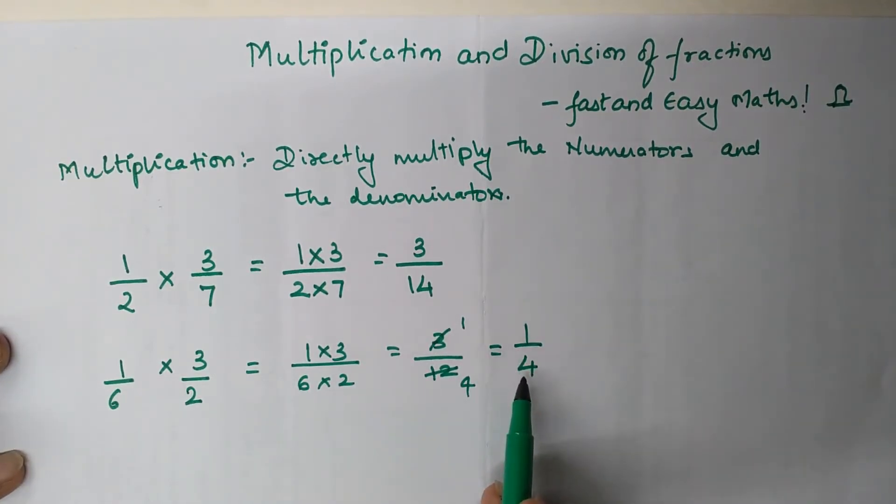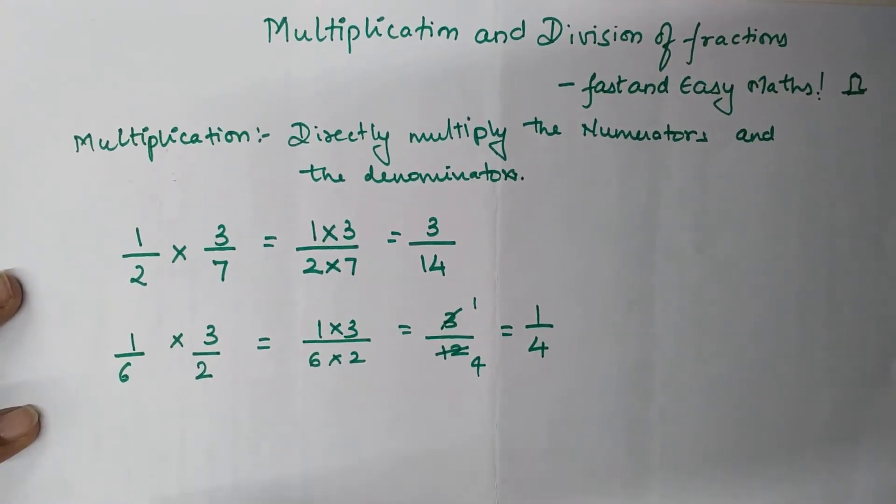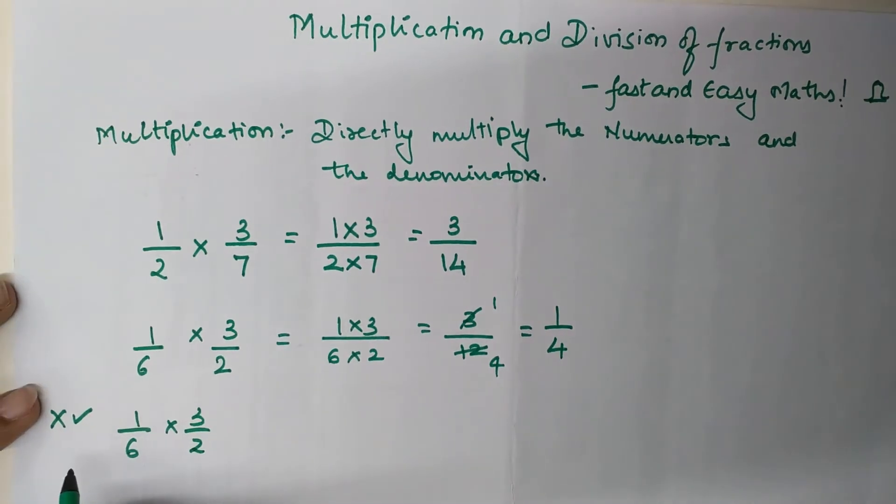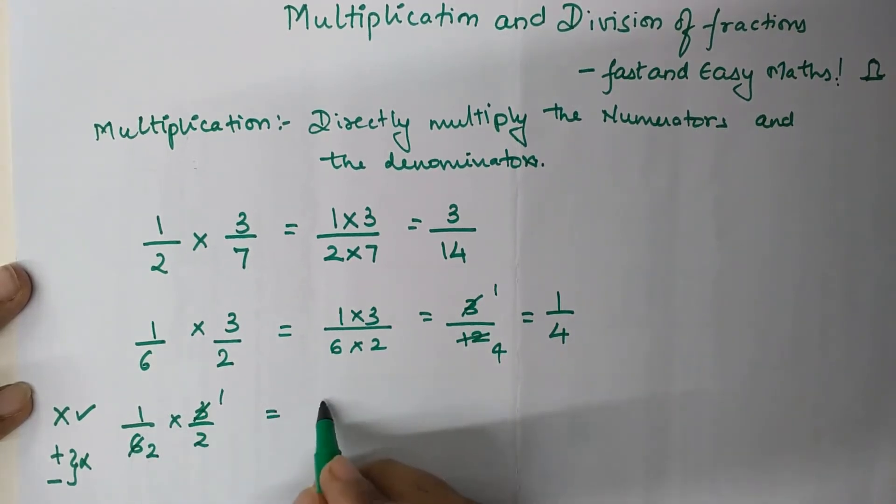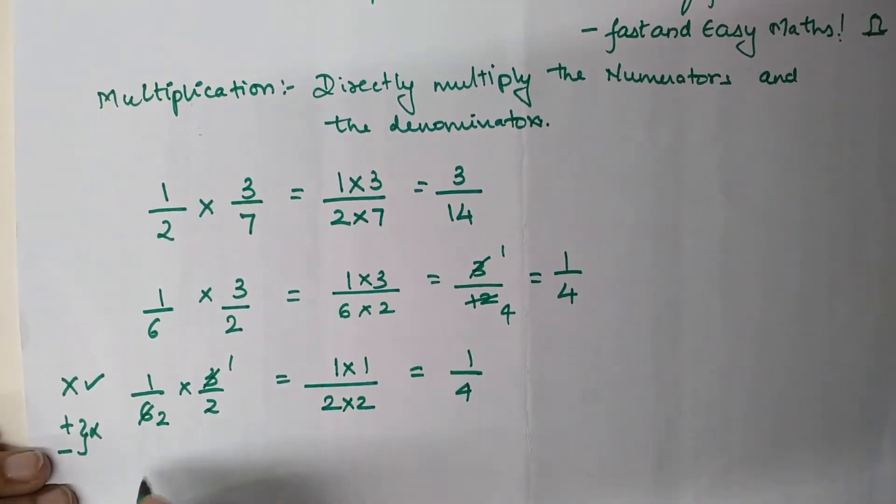This could have been done right here. With 1/6 times 3/2, any numerator can cancel any denominator, but this rule is only applicable for multiplication. It's completely wrong when you do that for addition or subtraction. So we have 3 canceling with the 6, and now my numerator is 1 times 1 upon 2 times 2, which is 1 upon 4.